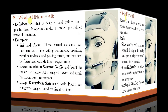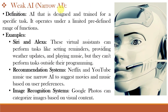First is weak AI, which is also called narrow AI because it has a narrow range of capabilities. Weak AI is a type of AI that is designed to perform a specific task or a limited set of tasks. These AI systems are highly specialized and cannot generalize their knowledge or capabilities beyond their intended purpose. For example, virtual assistants like Siri and Alexa can perform tasks like setting reminders, providing weather updates, and playing music.